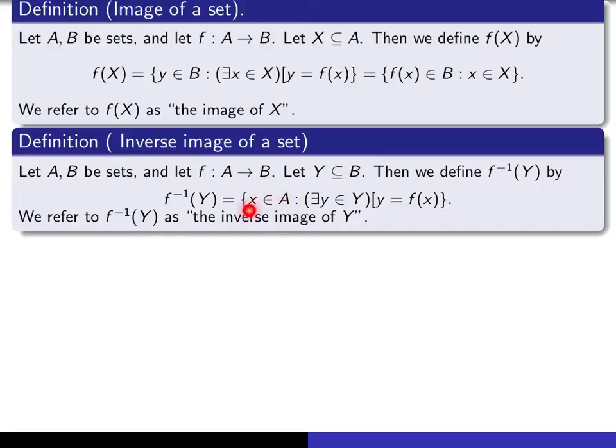So it's the set of all x in the domain such that, and here's the condition that puts x in the inverse image, it's that there exists a y in this underlying set Y that we're taking the inverse image of, such that y is equal to f of x. So it's the set of all x such that there exists a y in the underlying set Y such that y is equal to f of x.